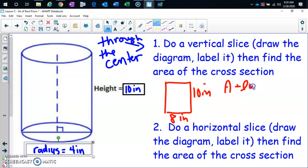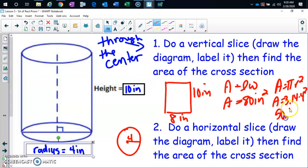So area, length times width. I'm going to cheat so we can move quickly. 80 inches squared. When I draw my horizontal cross section, you should have a circle with radius four. So your work will be area equals pi r squared. Area equals 3.14 times four squared is 50.24 square inches. That's what you should have had for your warm-up.